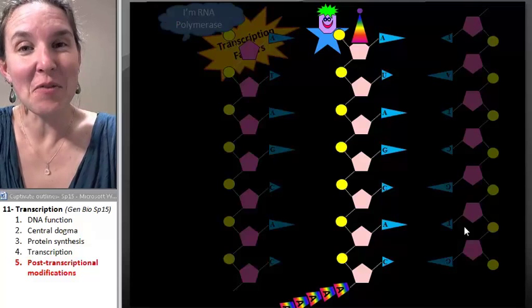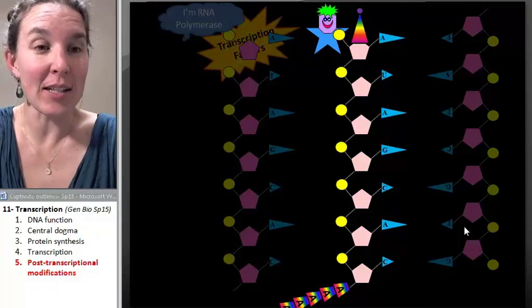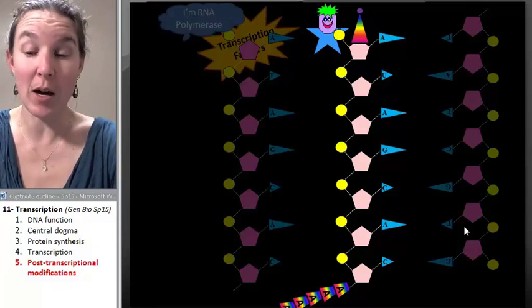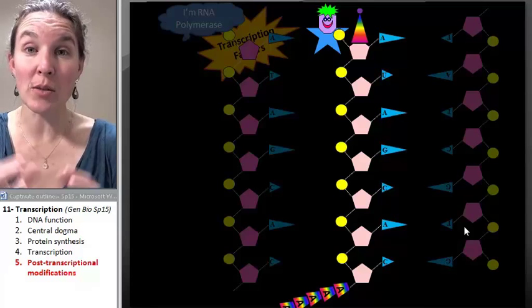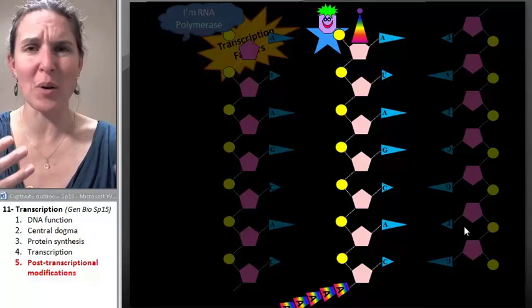So adding the five prime cap and the poly A tail, that's one set of modifications. That just increases stability of the molecule. It also allows the ribosome to know where to start.